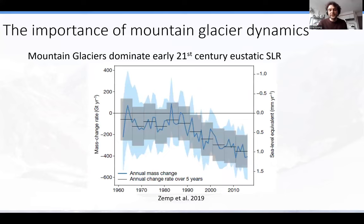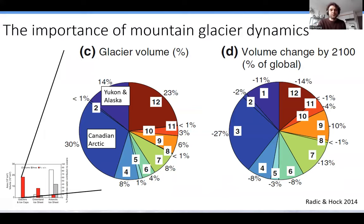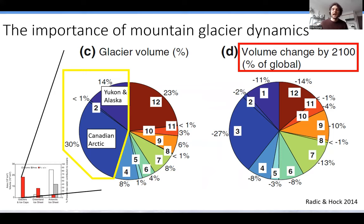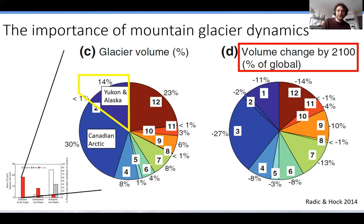These are older data, but every time these studies are repeated the trend is reinforced and if anything exacerbated. An important contribution — nearly 50% — comes from the Americas. These trends are predicted to continue throughout the 21st century; the numbers change depending on which emissions pathway we take, how much warming occurs, and how negative mass balance rates become, but they will continue to be important. For today we're going to zoom in on the Yukon and Alaska slice of this pie and look at the St. Elias Mountains.